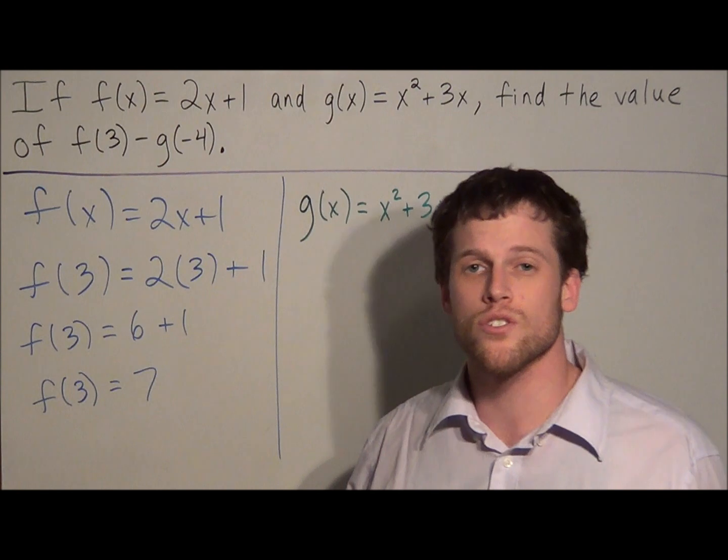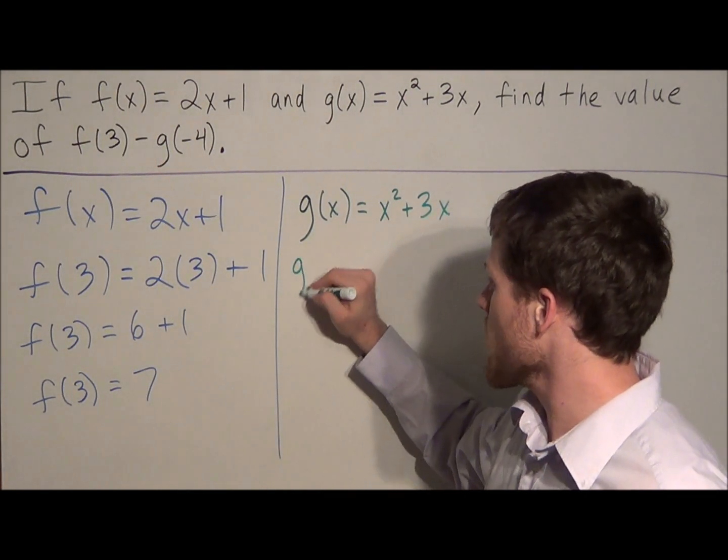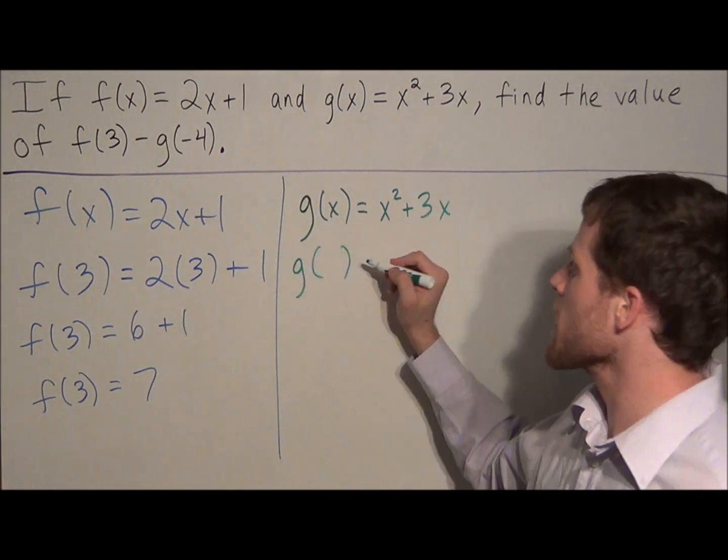And we know that the function g of x is equal to x squared plus 3x. But just like before, what we want to do is, anytime we see an x, we're now going to replace it with negative 4.